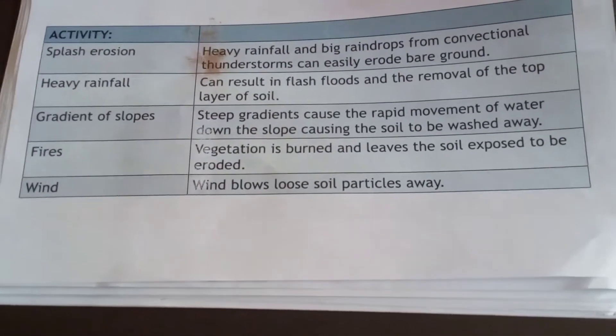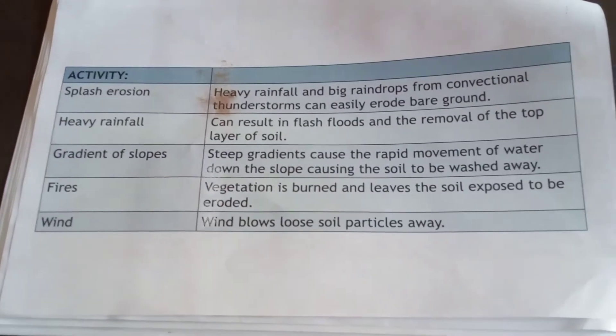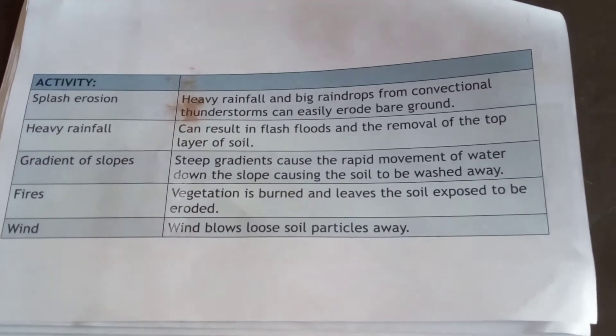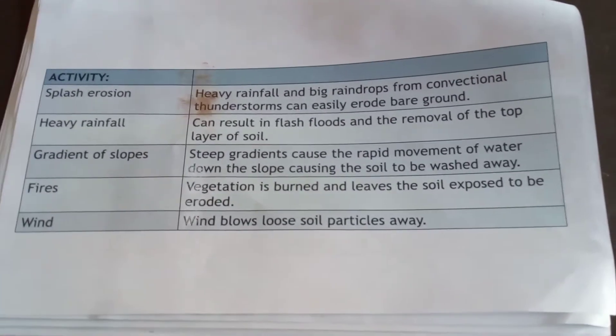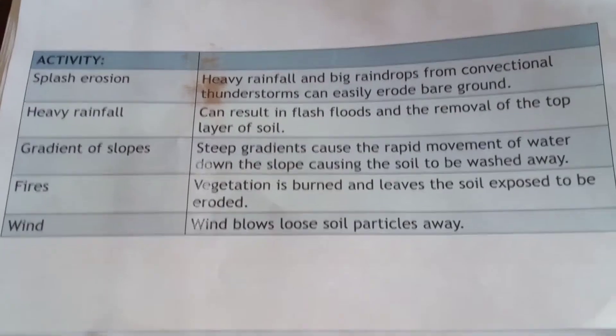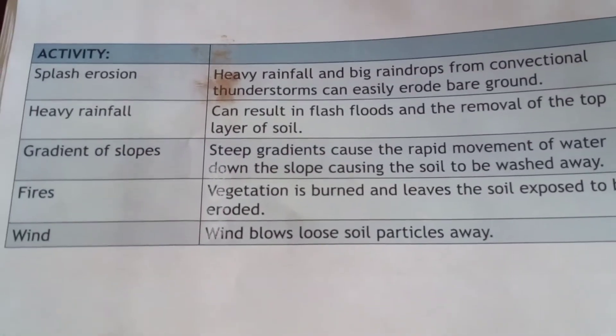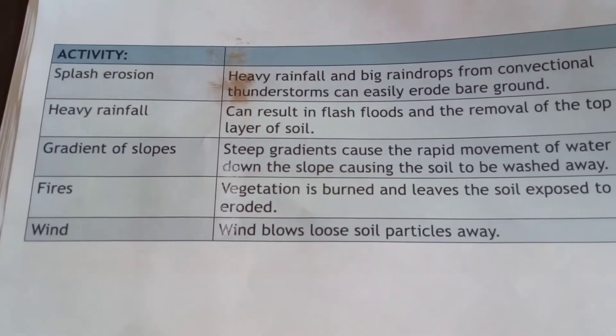The gradient of slopes is also a factor. Very steep gradients can cause rapid movement of water down the slope, causing soil to be washed away — especially if the soil is not bonded by vegetation. This can actually increase the processes of soil erosion.